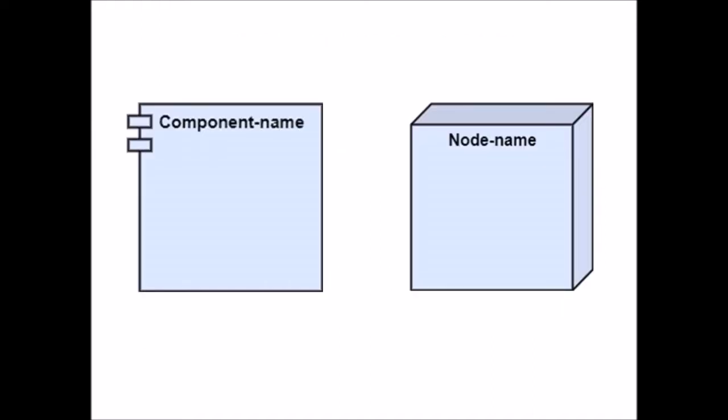The different notations used in a component diagram are a component and a node. A node is represented with a cube, and a component is represented with a rectangle with two sub-rectangles.